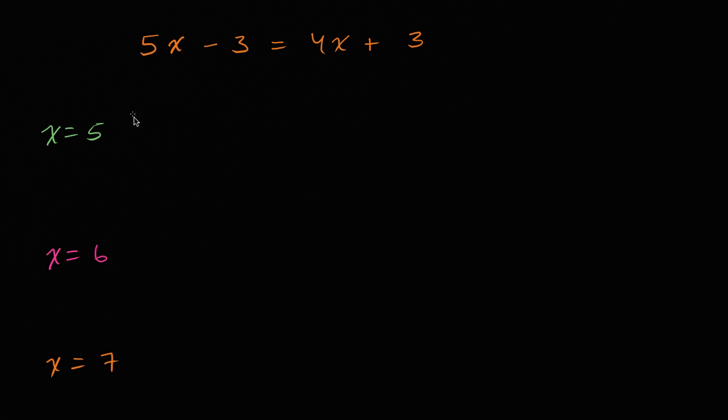If x is equal to five, then in order for this to be true, five times five—five times x—so five times five minus three needs to be equal to four times... Everywhere we see an x, we're going to put a five there. Let me just color code it. So this is the same thing as saying five times five minus three.